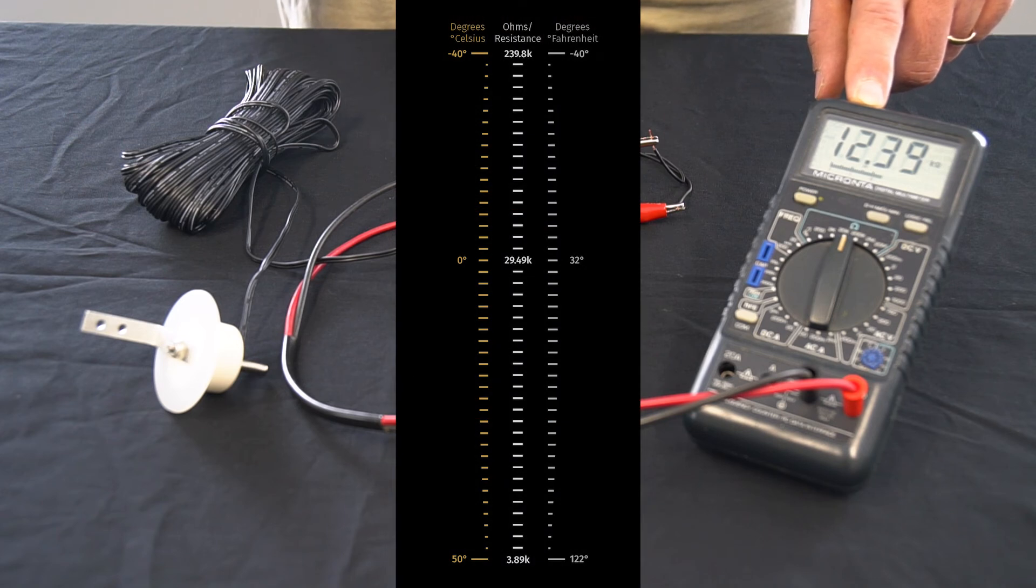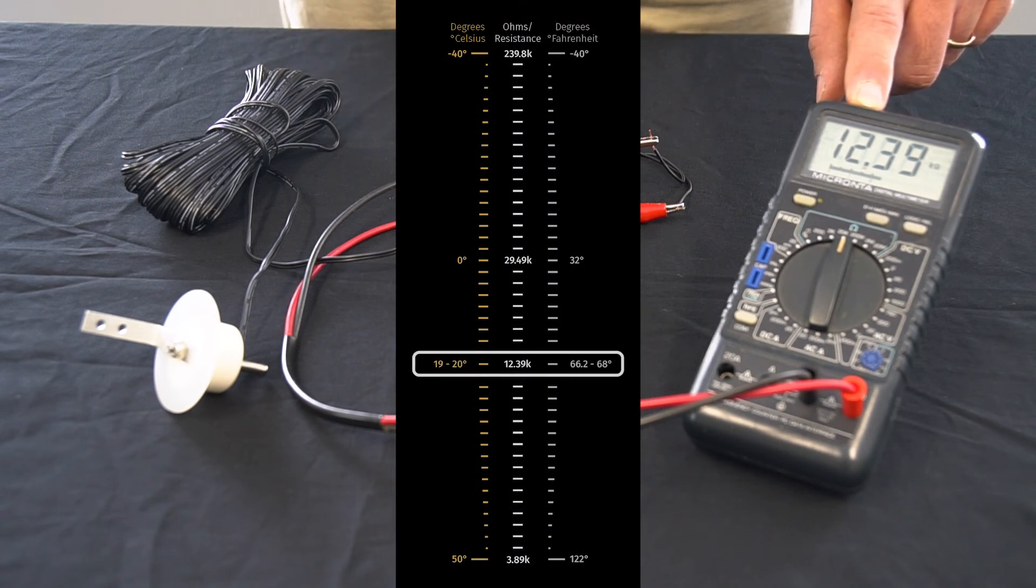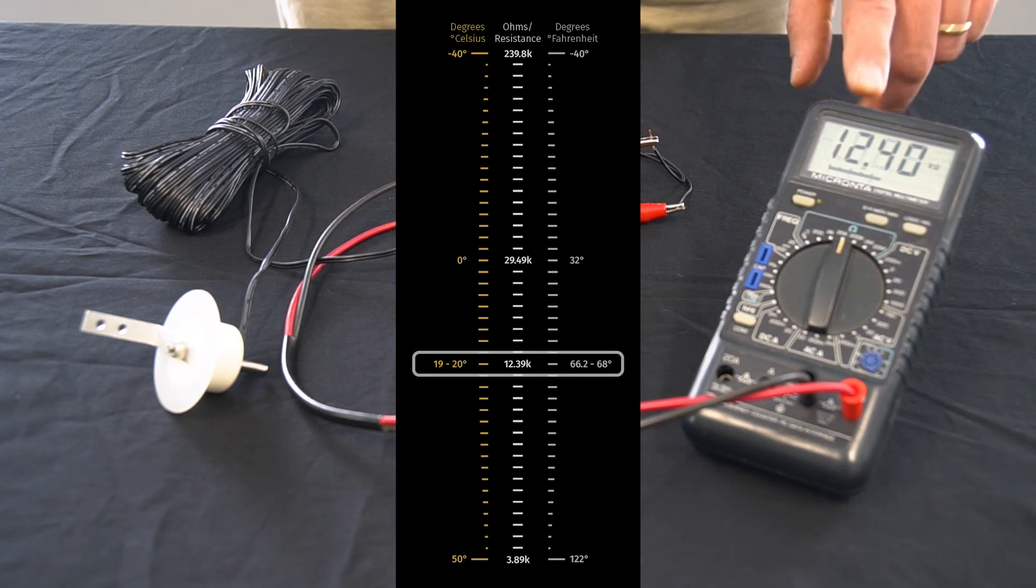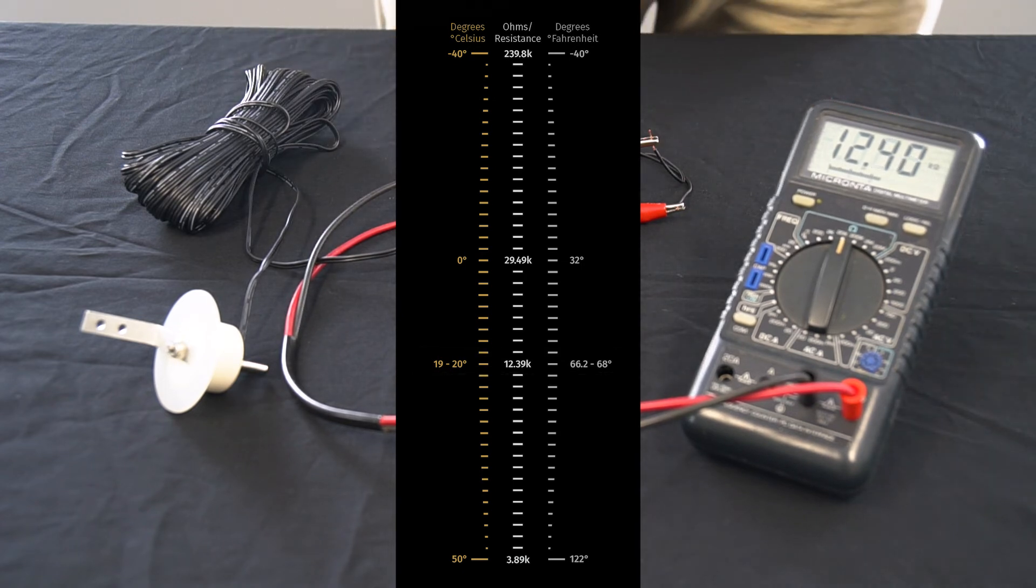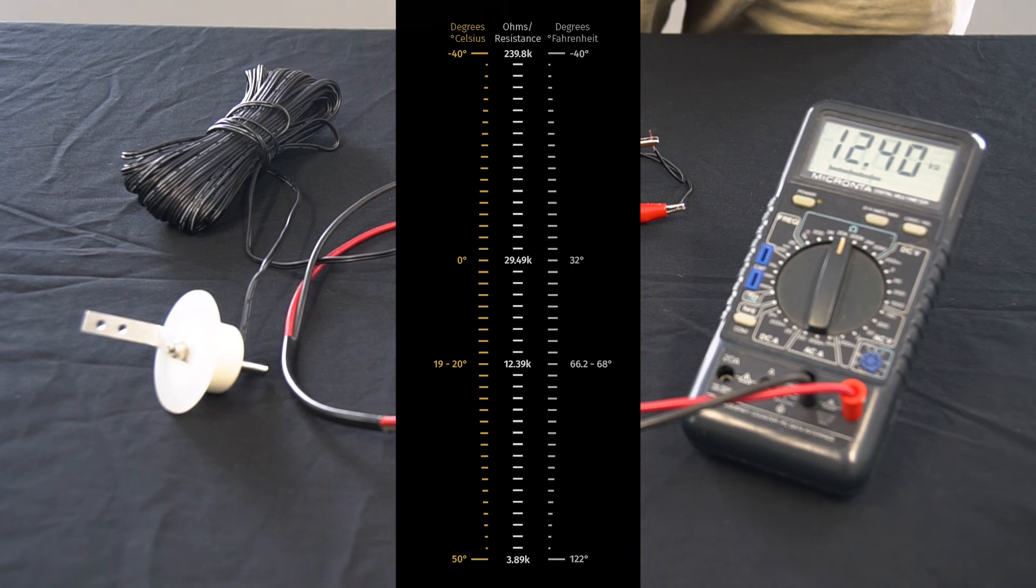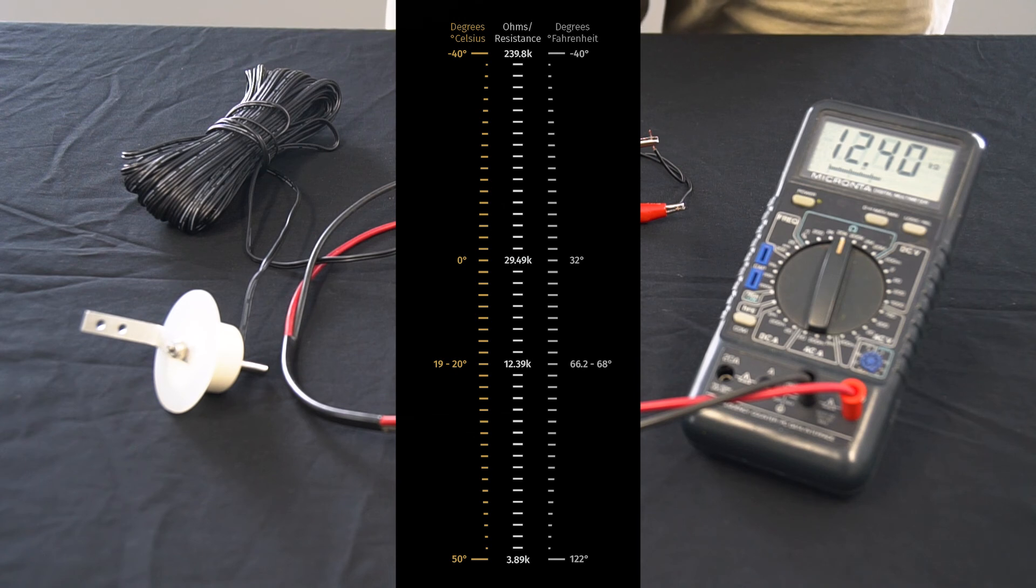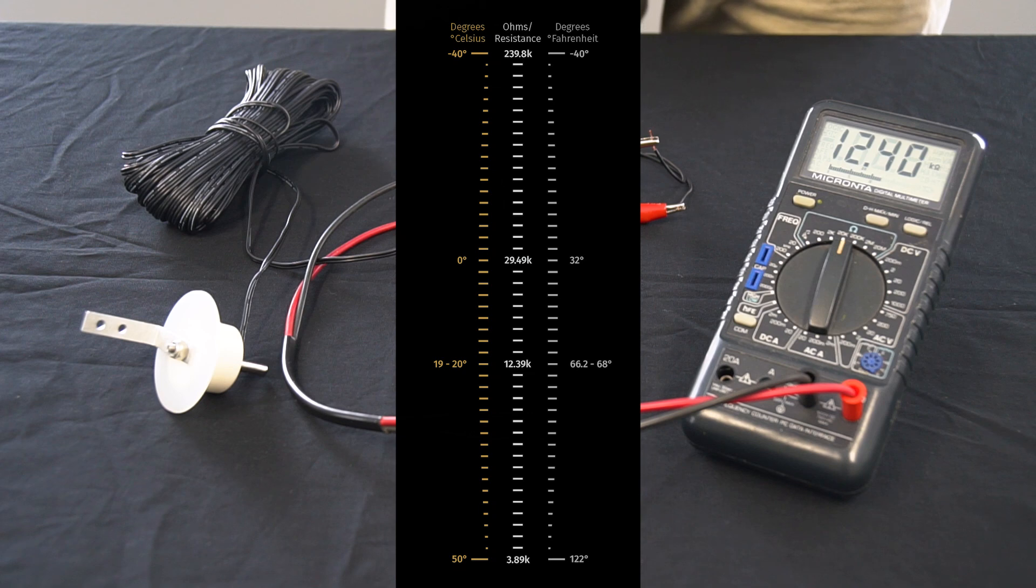A reading of 12,390 ohms or 12.39 k ohms is read. If you were to refer to the electrical specification sheet of our air temperature sensor, a reading of 12.26 k ohms is 68 degrees. This is how you would test the maximum air temperature sensor.